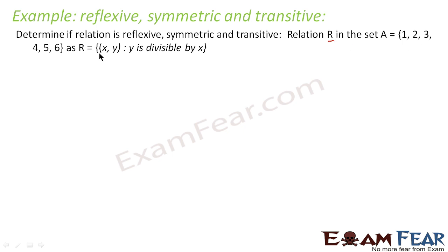...you have to find if the relation is reflexive, symmetric or transitive where relation R in the set A = {1, 2, 3, 4, 5, 6} is defined as R = {(x, y) : y is divisible by x}. Now, if you see this, y is divisible by x, there can be so many elements. For example: